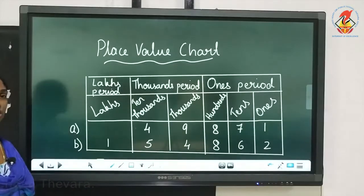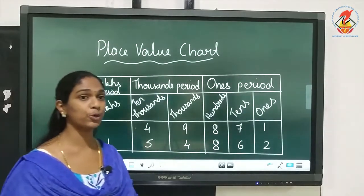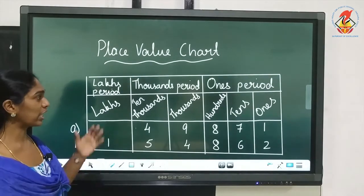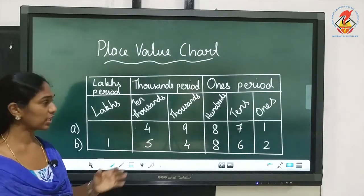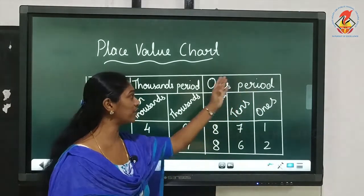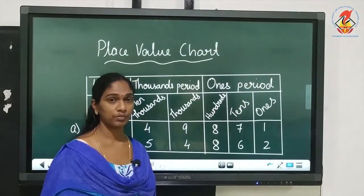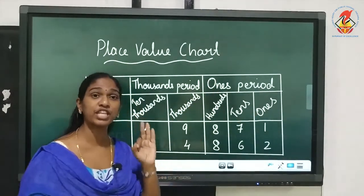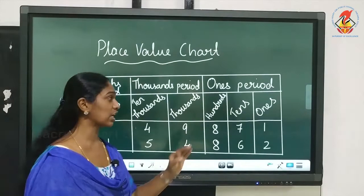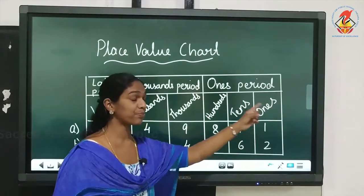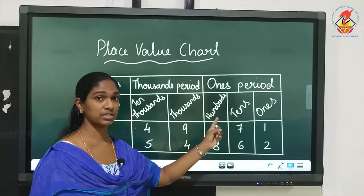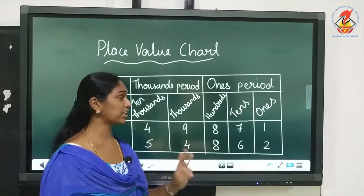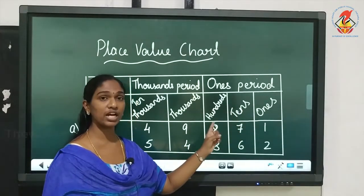Next, I am moving to the topic place value chart. In the place value chart, starting from the right end, you have the ones period. Under the ones period we have 3 places: ones place, tens place, and hundreds place.